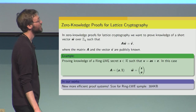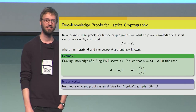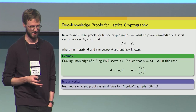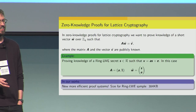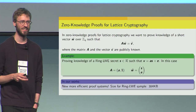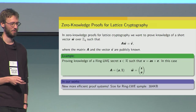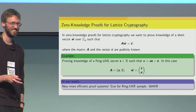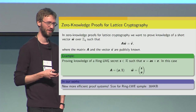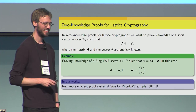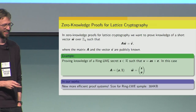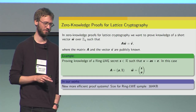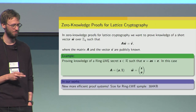Our papers are concerned with zero-knowledge proofs for lattice cryptography, and in this area the main problem one wants to solve is proving a short solution to a linear equation. There is some public matrix A and some public right-hand side V, and the prover wants to prove that he knows the short vector W such that A times W equals V. The simplest example, which illustrates that natural lattice problems can be phrased this way, is proving knowledge of an LWE secret, which can be written in matrix-vector form where the secret vector consists of the LWE secret and the error.